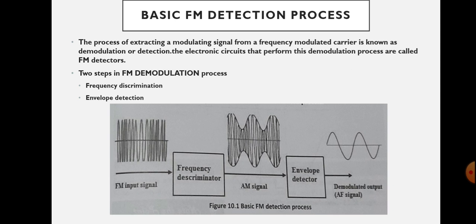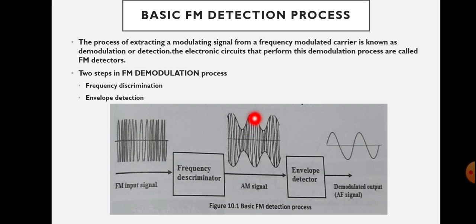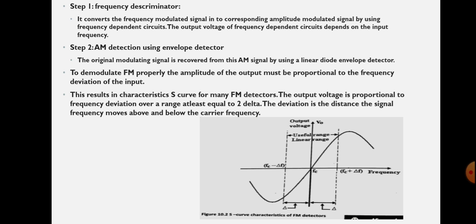To demodulate FM properly, the amplitude of the output must be proportional to the frequency deviation of the input. You can see here the frequency discriminator where demodulation takes place — the amplitude of the output waveform is proportional to the frequency deviation of the input. For higher frequencies the amplitude should be higher, and for lower frequencies the amplitude should be lower. Here, frequency deviation to amplitude conversion is taking place.